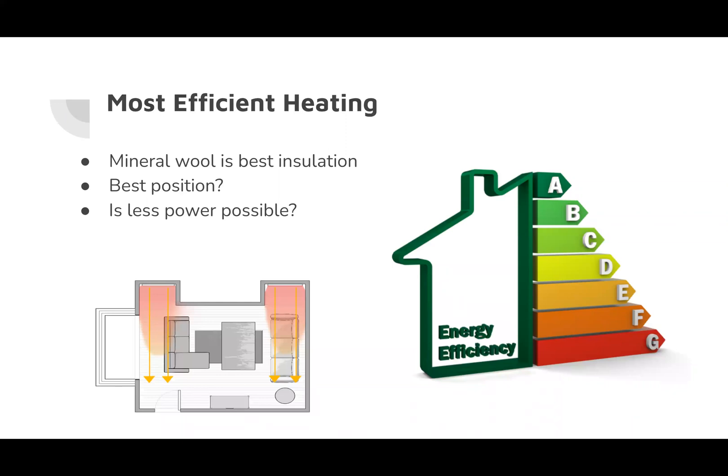So our next goal was to determine the most efficient heating system. Like we mentioned before, we did determine that mineral wool is the best insulation, so that is what will be used in this heating system. We next needed to find the best position for the central heat sources for more consistent and quicker heating across the room with little to no heat loss through the insulation. Also, if possible, we would like to have less power output than the radiators because it would be much more cost efficient.